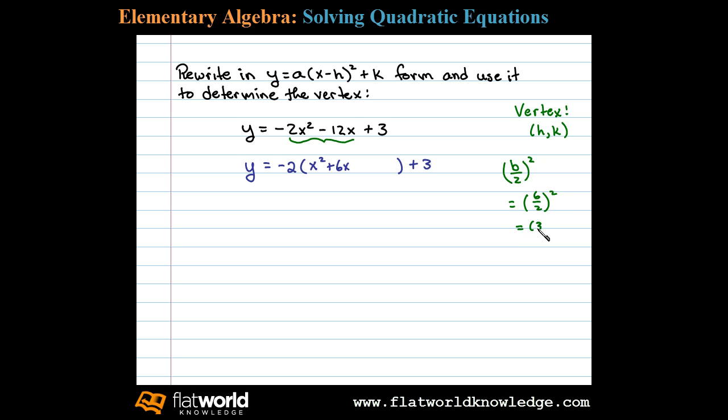So the idea is to add 9 and subtract 9 on the same side of the equation. This doesn't change anything. Now when we do that, we can factor these three terms. These three terms will factor into a perfect square trinomial.